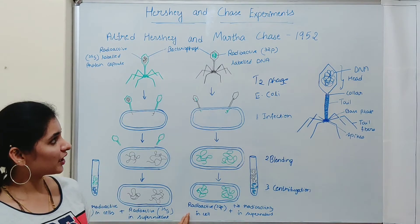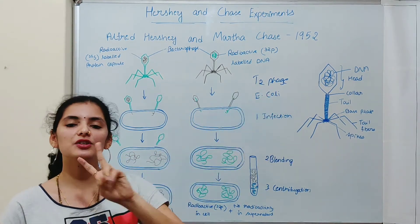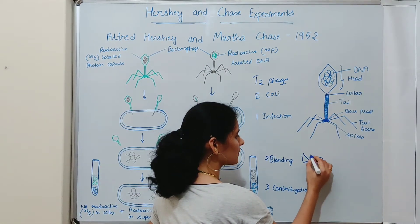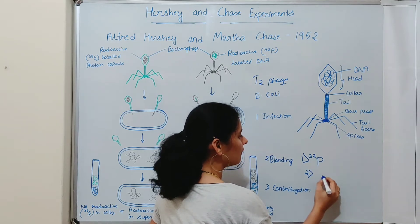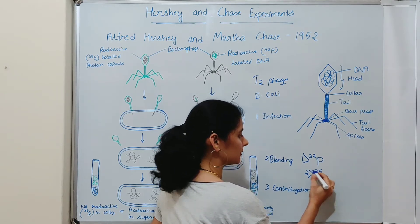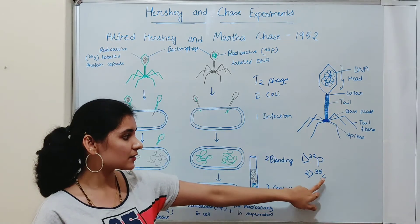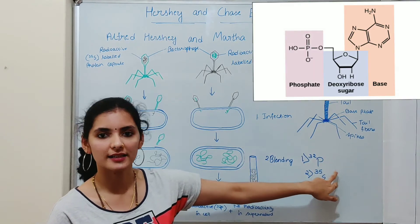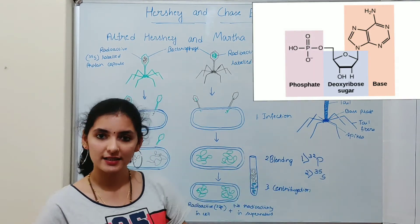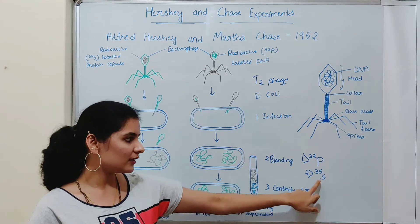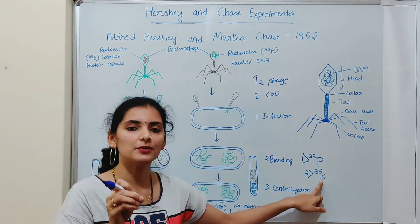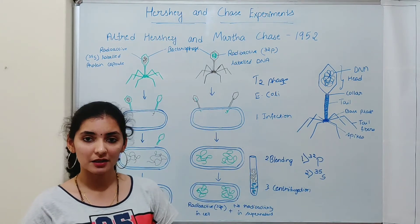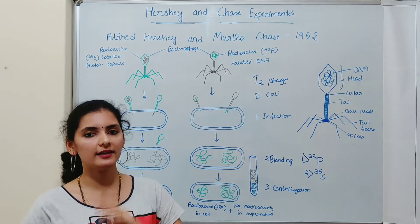In this experiment, Hershey and Chase cultured T2 phage in two different culture media: one containing radioactive phosphorus and another containing radioactive sulfur. They chose radioactive phosphorus and radioactive sulfur because phosphorus is a component of DNA but not protein, while sulfur is a component of protein but is absent in DNA. They had doubt between protein and DNA as the genetic material, so this distinction was key to their experimental design.